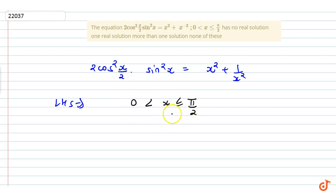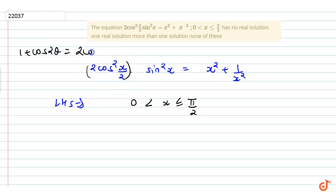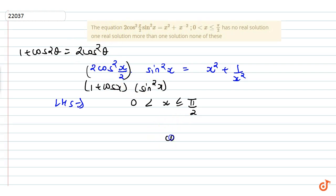Starting from the LHS, we use the identity: 2cos²(x/2) = 1 + cosx. So the LHS becomes (1 + cosx)·sin²x. We can apply the formula 2cos²(theta) = 1 + cos(2theta) here, transforming the left-hand side using these trigonometric identities.